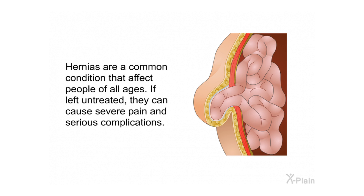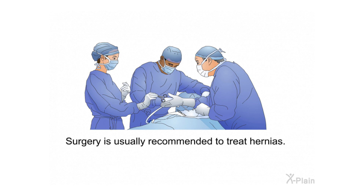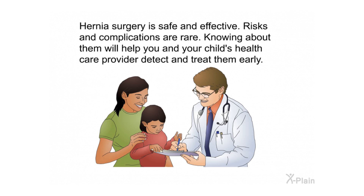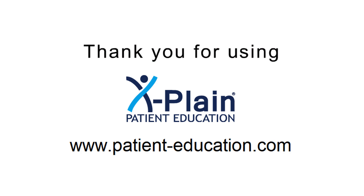Summary. Hernias are a common condition affecting people of all ages — if left untreated, they can cause severe pain and serious complications. Surgery is usually recommended to treat hernias. Umbilical hernia repairs in children are usually done under general anesthesia. One or several incisions are made over or near the hernia, the contents of the hernia are pushed back into the abdomen, and the muscles are sutured back together. Hernia surgery is safe and effective — risks and complications are rare, and knowing about them will help you and your child's health care provider detect and treat them early.